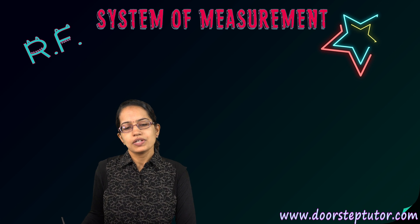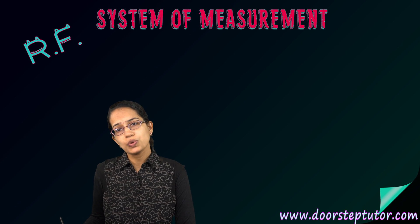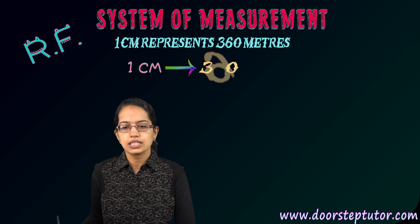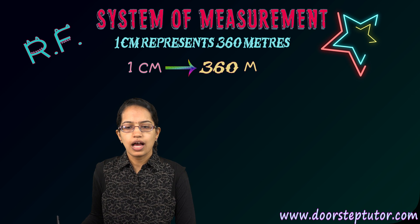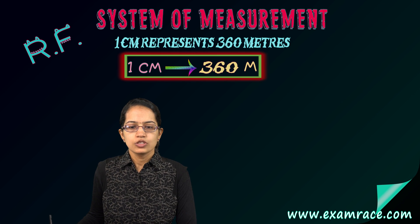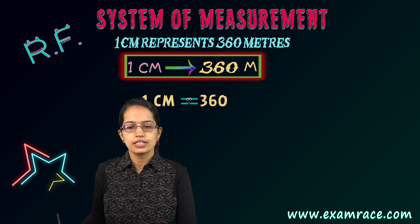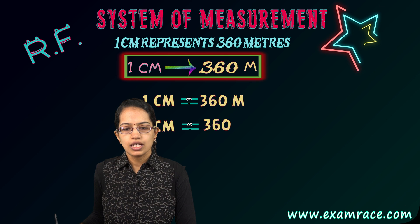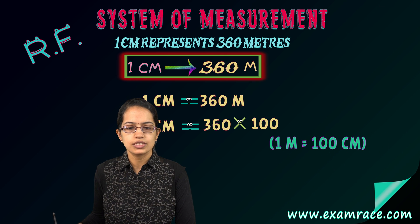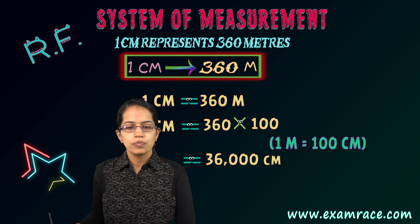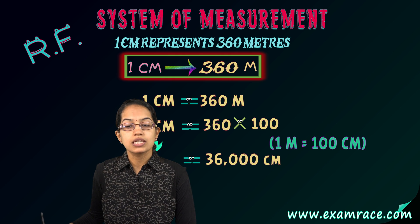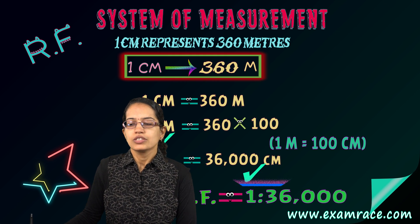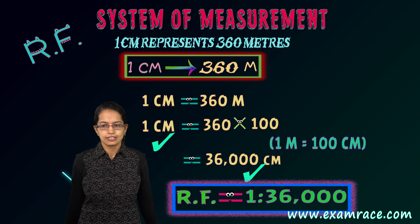If I have a statement — 1 centimeter represents 360 meters — and want to convert it to a representative fraction, I standardize the units. 1 centimeter equals 360 meters, and since 1 meter equals 100 centimeters, that's 360 × 100 = 36,000 centimeters. Both units are now in centimeters, so the representative fraction is 1:36,000.